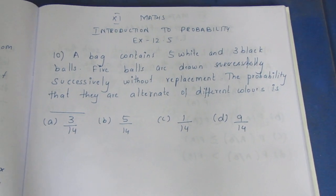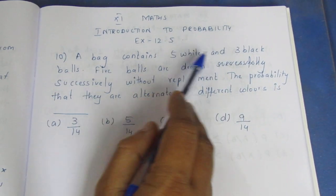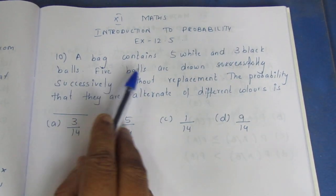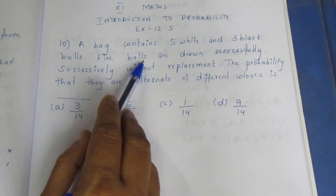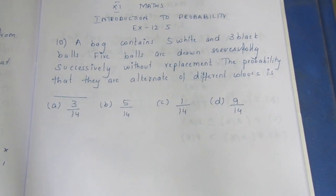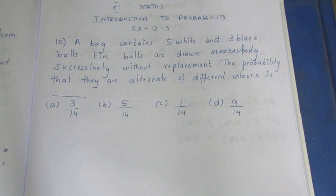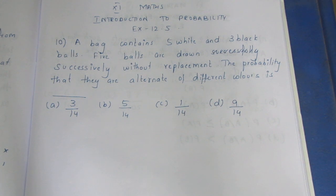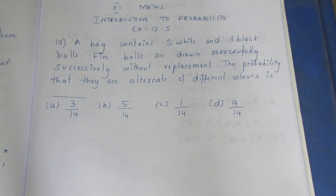Question: A bag contains 5 white and 3 black balls. 5 balls are drawn successively without replacement. Find the probability that they are alternate colors. If the first ball drawn is white, what is the probability? If the first ball drawn is black, what is the possibility?